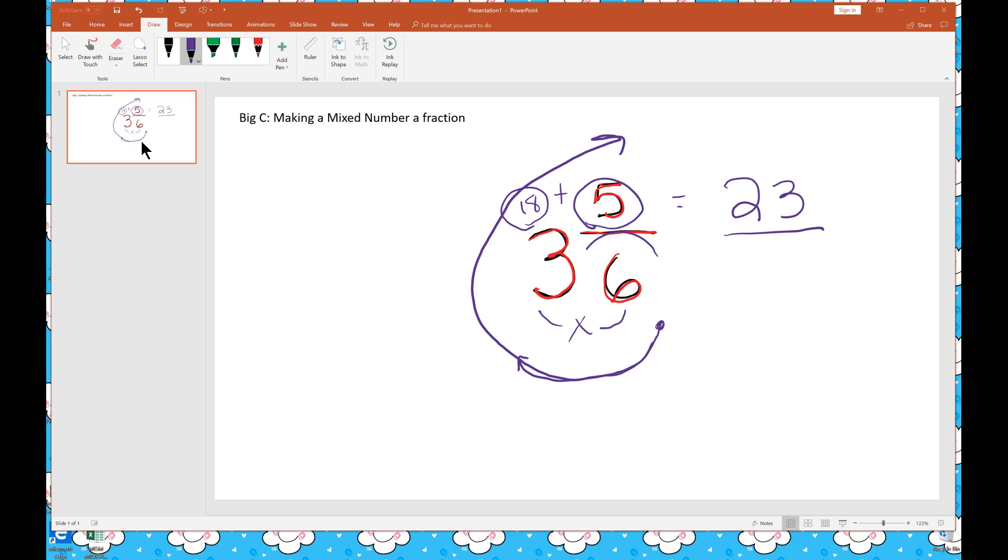Then we take our old denominator and just slide it across. The mixed number 3 and 5/6 is equal to 23/6.